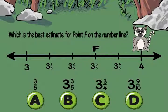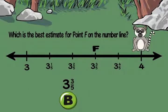I get it now. I have to see what numbers I'm between. Three-fifths past three is three and three-fifths. So point F is at three and three-fifths. Thanks!